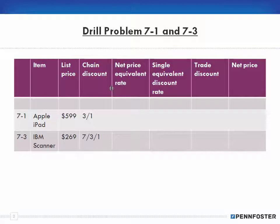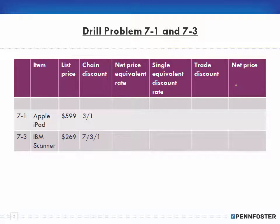For drill problems 7-1 and 7-3, it says complete the following. We're given the item, the list price, and the chain discount. Then we're asked to find the net price equivalent rate, the single equivalent rate, the equivalent discount rate, how much is the trade discount, and how much is the net price. The net price equivalent rate and the single equivalent discount rate are in decimal format taken out to four decimal places, and the trade discount and net price are in dollar-and-cent amounts.